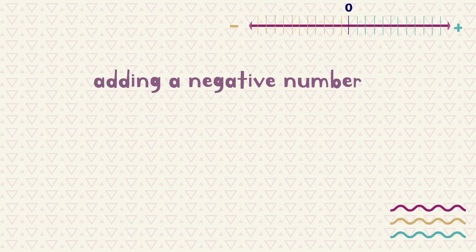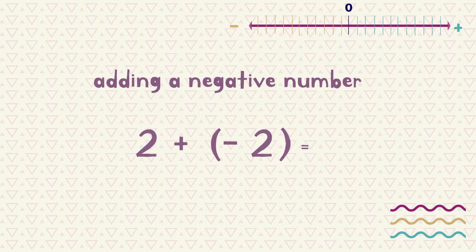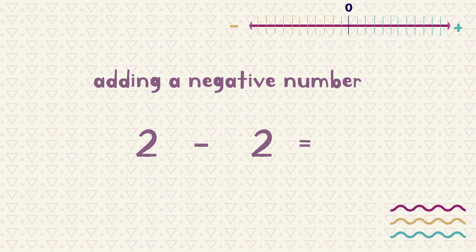So how about when we add a negative number? Here we are adding a negative 2 to the number 2. Again, we are just subtracting 2, which leaves us with 0.